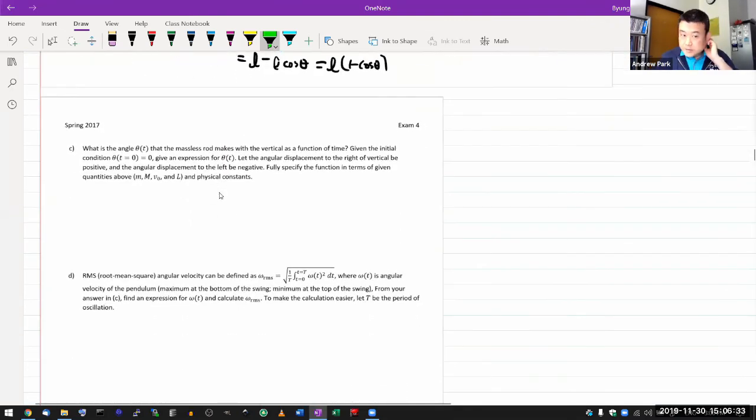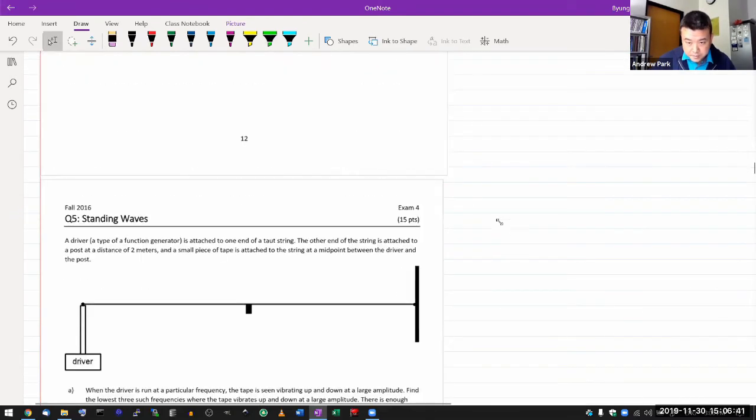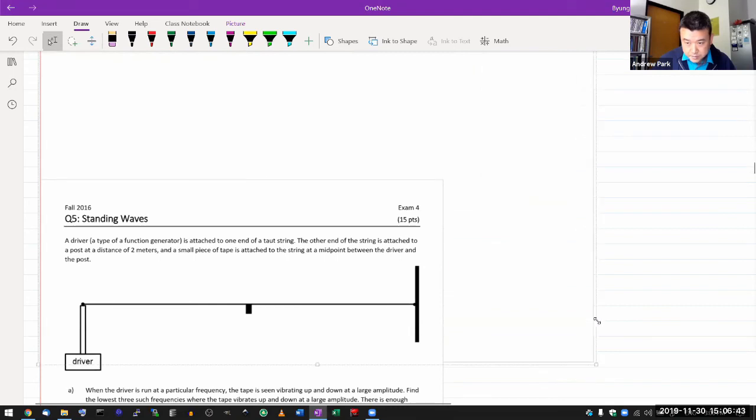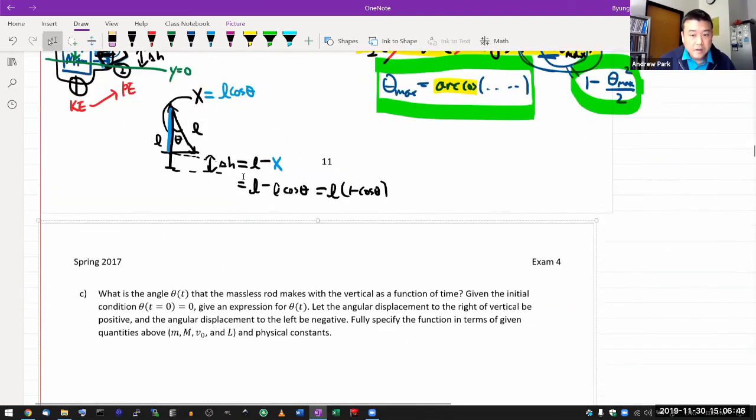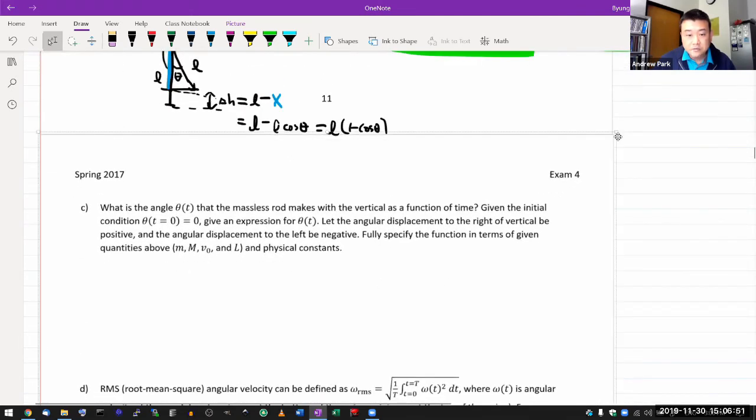Okay, continuing part C. It's asking what is the angle theta? And let me just expand this a little bit. Okay, all right, I'm going to have to fix this later. What is the angle theta that the massless rod makes with the vertical as a function of time given the initial condition, give an expression for theta of t? So, yeah, and let the angle theta be positive and then negative.